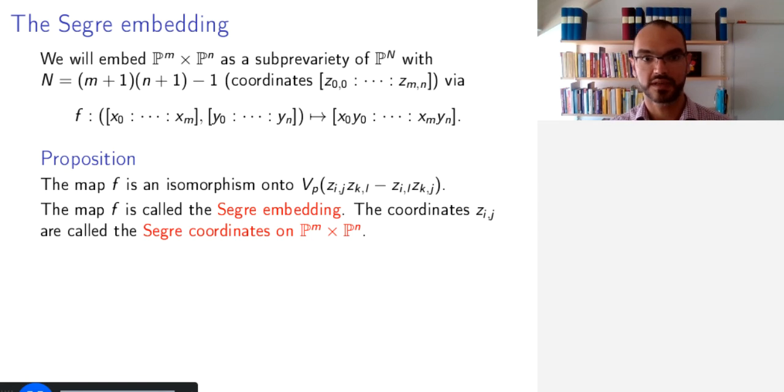So this map F is called the Segre embedding of P^m times P^n into P capital N. And the coordinates Z_IJ are called the Segre coordinates on P^m times P^n. This map is named in honor of the Italian algebraic geometer Segre. And when we look at the Segre coordinates, we're really viewing P^m times P^n as sitting inside P capital N already, and use these coordinates to describe that variety.